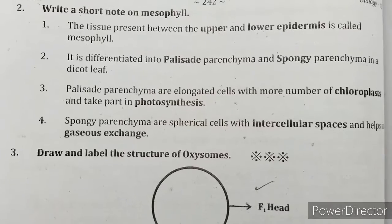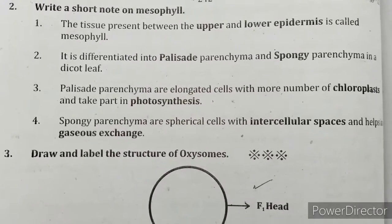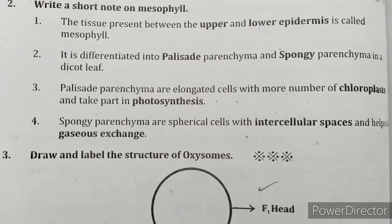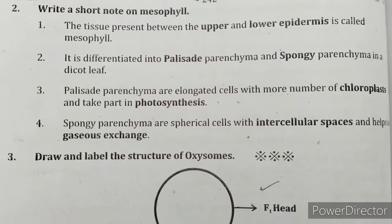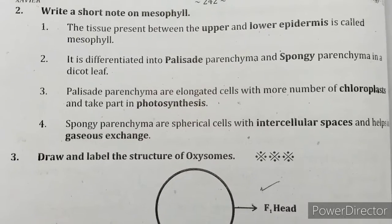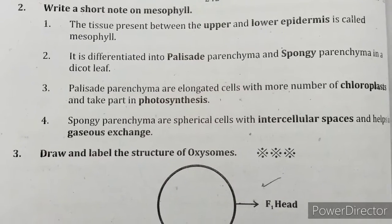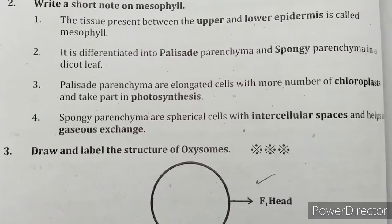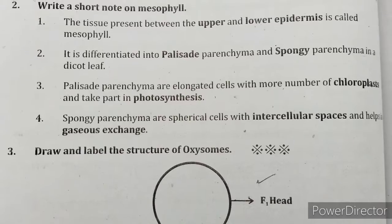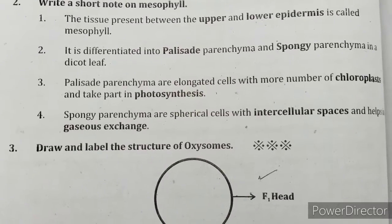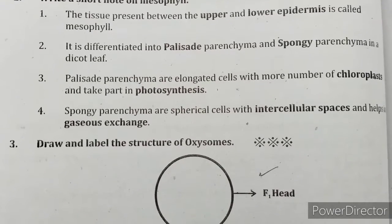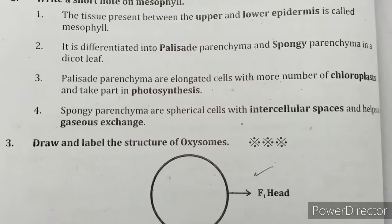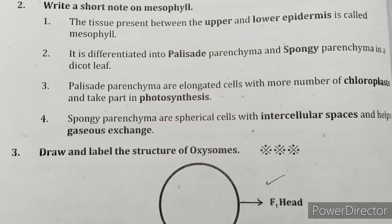Write a short note on mesophyll. The tissue present between the upper and lower epidermis is called mesophyll. It is differentiated into palisade parenchyma and spongy parenchyma in a dicot leaf. Palisade parenchyma cells are elongated with more chloroplasts and take part in photosynthesis. Spongy parenchyma cells are spherical with intercellular spaces and help in gaseous exchange.